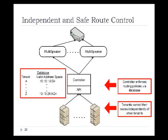The second property is independent and safe route control. To achieve independence, tenants control their routes independently of other tenants — each tenant installs their application in their own network and their own box, so the effect of one tenant is isolated from others. To achieve safe route control, the controller enforces routing policies via a database listing each tenant and the valid address space they can manipulate. For example, if a tenant tries to manipulate a route outside their allowed address space, the controller will not honor that request.